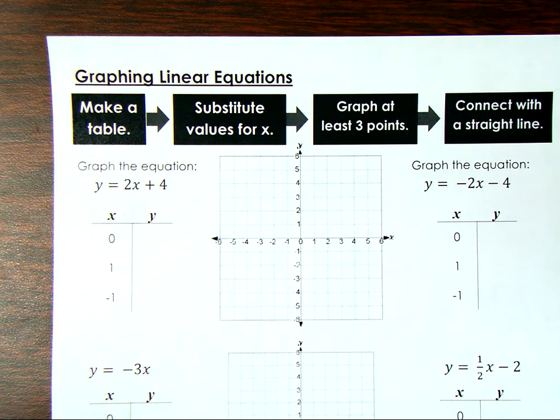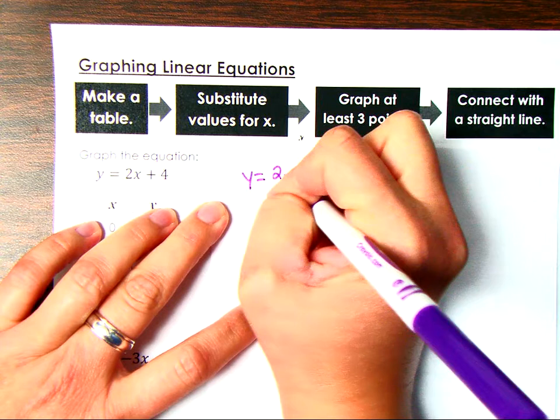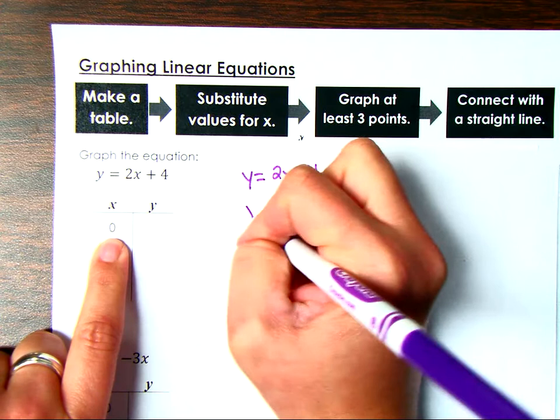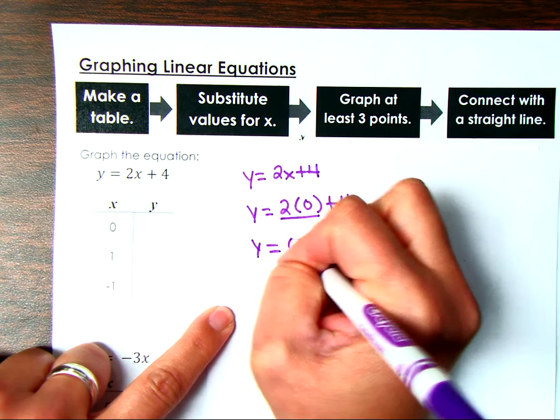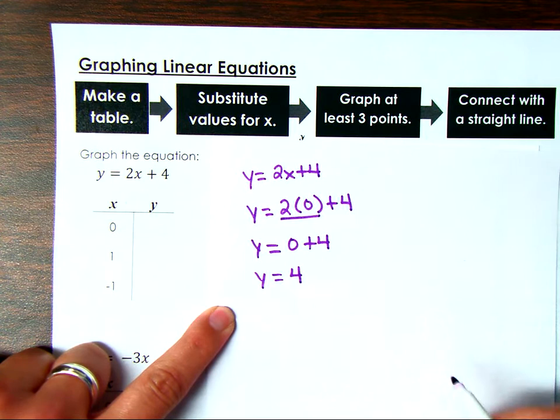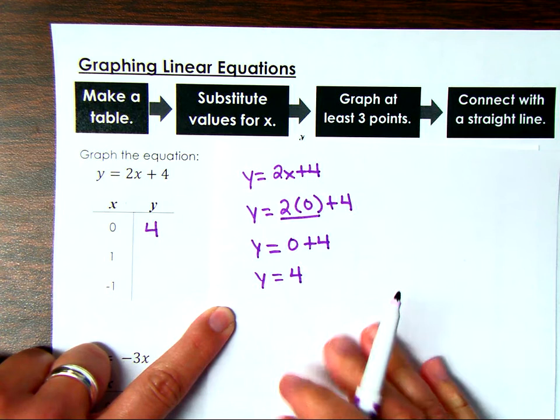I'm going to graph this first equation and use a separate sheet of paper to substitute. So if y equals 2x plus 4, I'm going to take 0 and plug it in where I see x. So y equals 2 times 0 plus 4. Order of operations — I multiply first. 2 times 0 is 0, and then 0 plus 4 is 4. So when my input is 0, my output is 4. That's my first ordered pair.